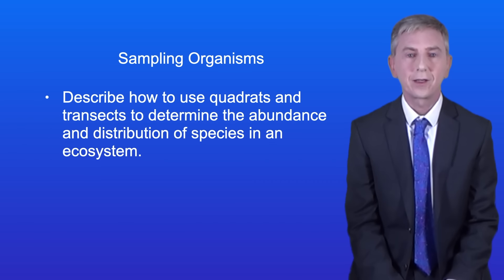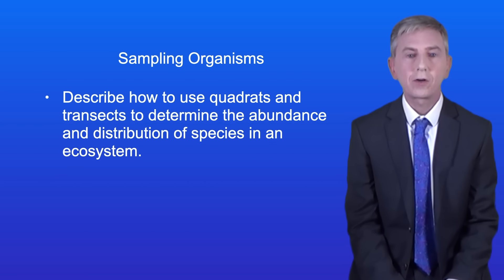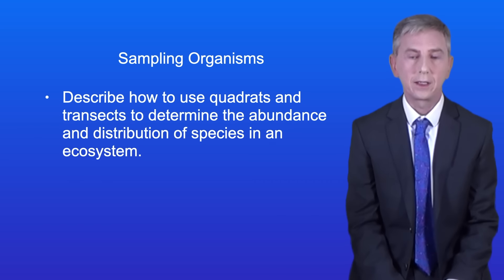Hi and welcome back to freesciencelessons.co.uk. By the end of this video you should be able to describe how to use quadrats and transects to determine the abundance and distribution of species in an ecosystem.